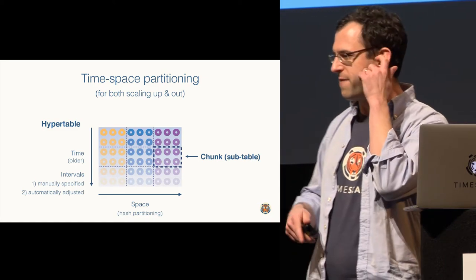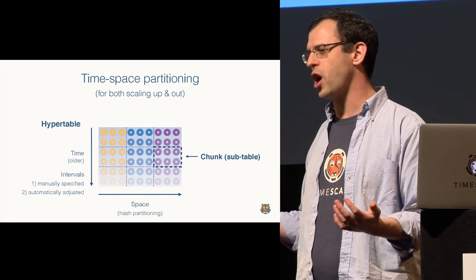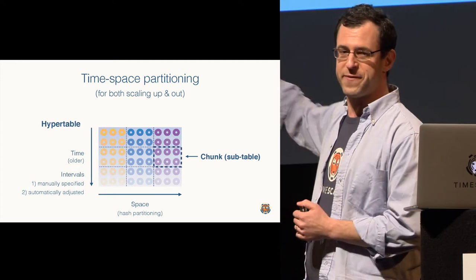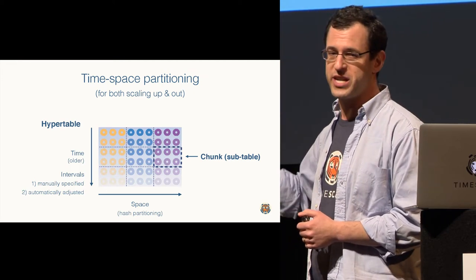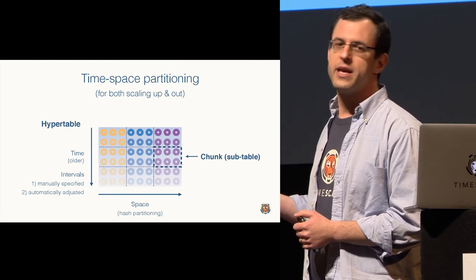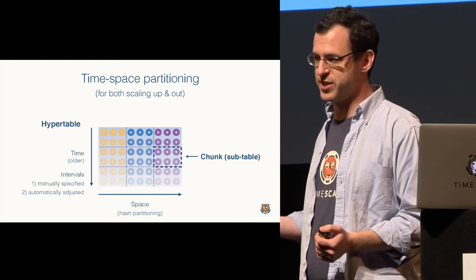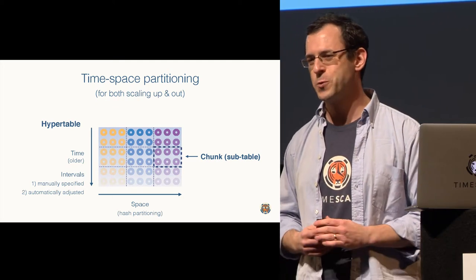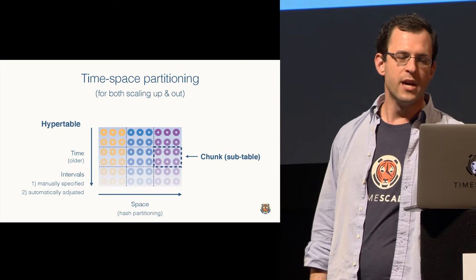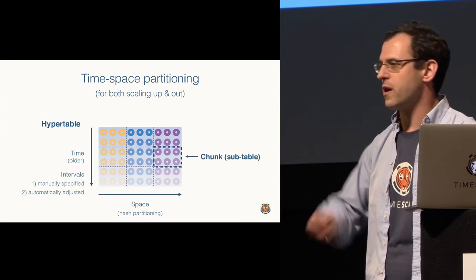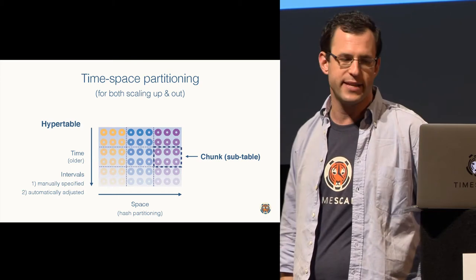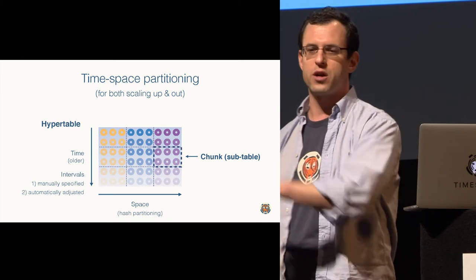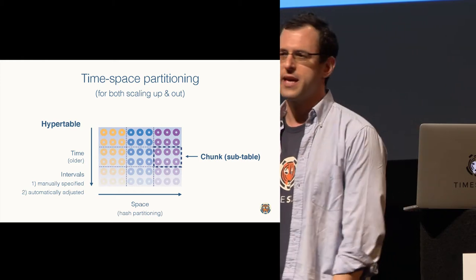The first thing is by time. You could build a bunch of partitions. These time intervals could be specified manually, like hourly or daily. Or the database also has a way to dynamically adjust these intervals based on data volumes. The second thing is you could do this in terms of some space where commonly we'll do interval or hash partitioning in space. A common thing is if you have many different devices, you want to separate them to get good-sized chunks.